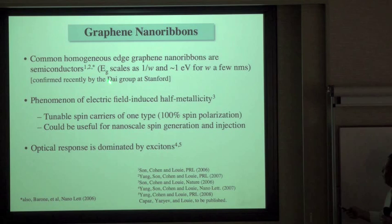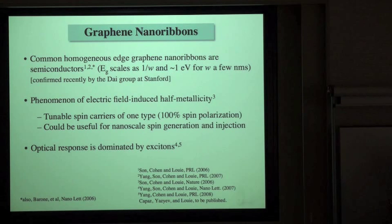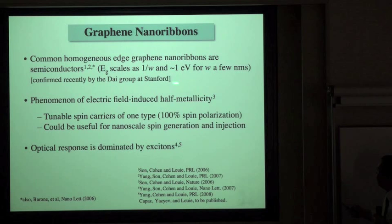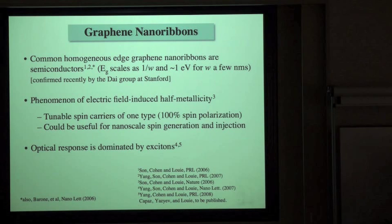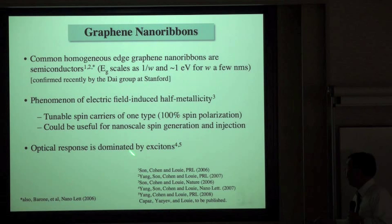For zigzag edge nanoribbons, we find you can make the system into a half-metal by applying a transverse electric field, where carriers are 100% spin-polarized and tunable by the field — interesting for spin generation and injection applications. We also find that the optical response of graphene nanoribbons is dominated by excitons, similar to carbon nanotubes, though the character of the excitons in ribbons is quite different from that in nanotubes.